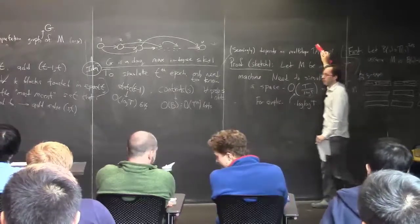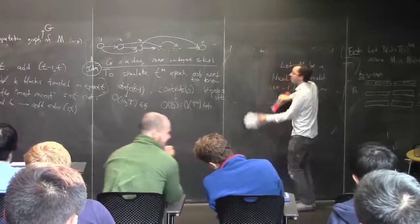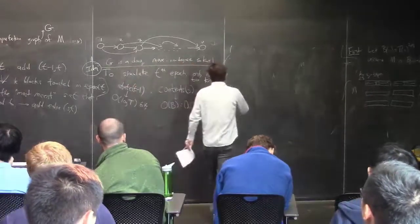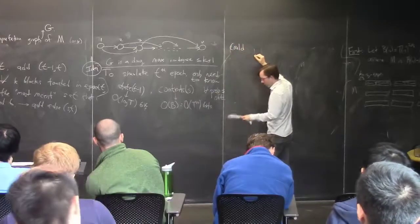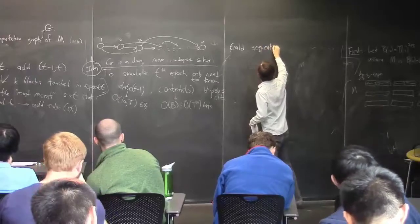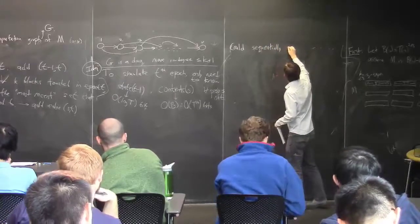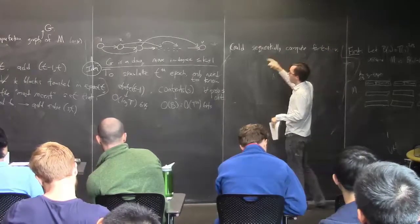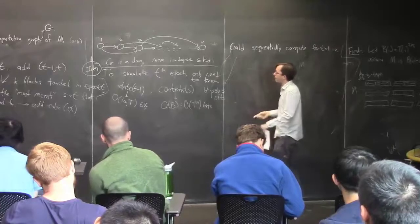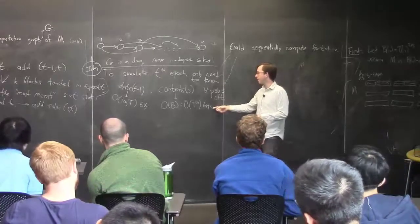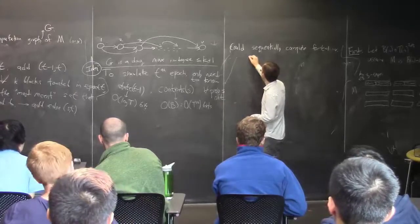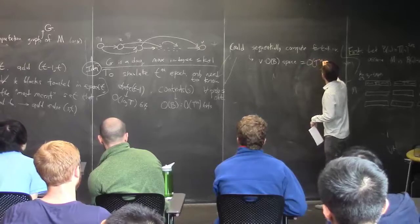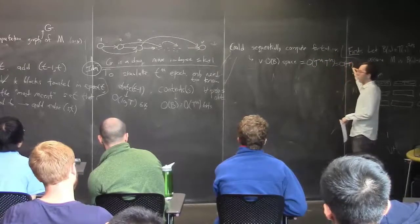Because you know the k blocks you're going to be working on, and you stay inside those blocks during epoch t since it's block-respecting. So it's enough to carry out this part of the simulation knowing just the contents coming in at the beginning of the epoch. There are at most k such predecessors, so this is O(B) = O(T^(2/3)) bits.